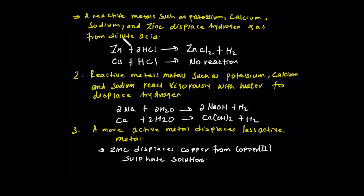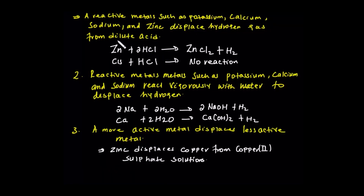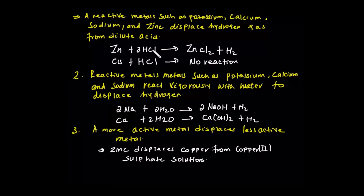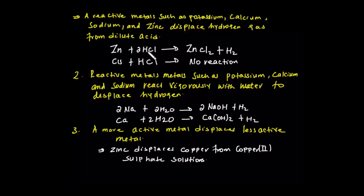For example, we can apply zinc to dilute hydrochloric acid. Zinc displaces hydrogen from hydrochloric acid because zinc's reactivity is greater than hydrogen. So we have zinc chloride and hydrogen gas as products.